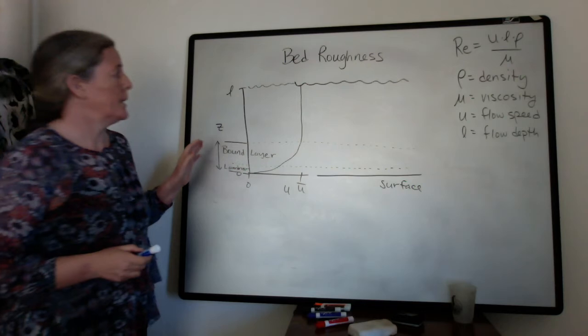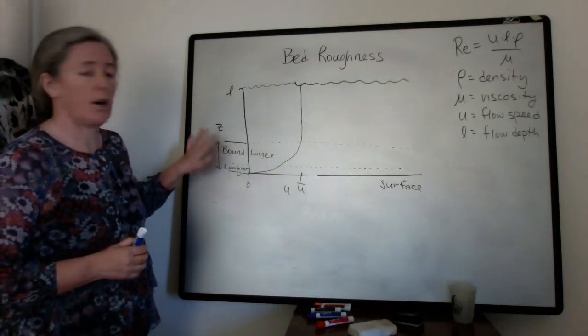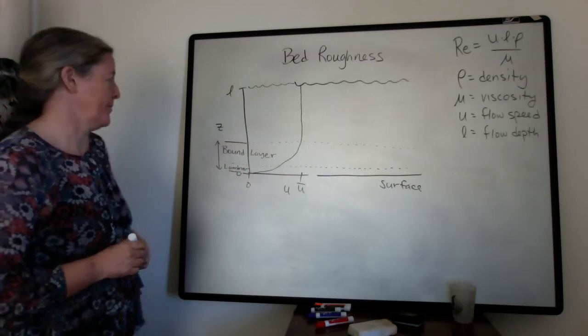I want to talk a little bit about the turbulence behavior in the flow in the context of the boundary layers and also the role of bed roughness.